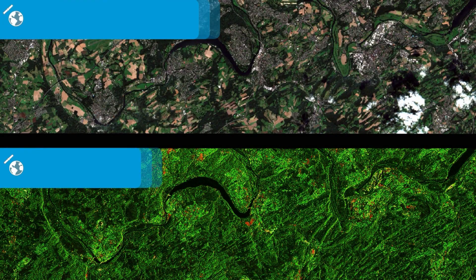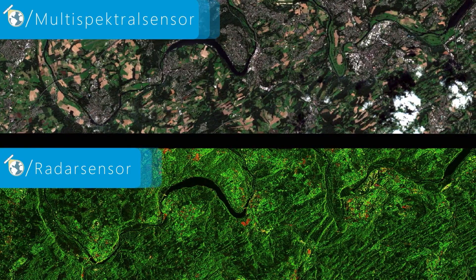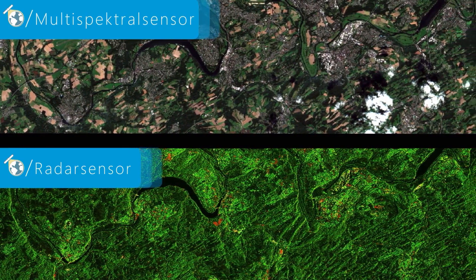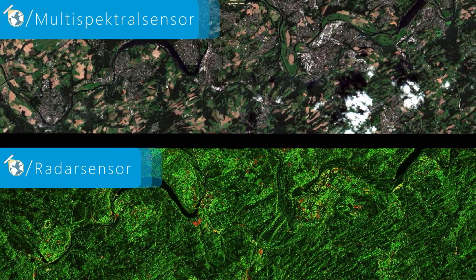At first glance, multispectral and radar images often appear very similar. However, the two underlying imaging systems differ fundamentally from each other.